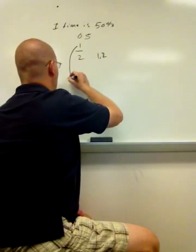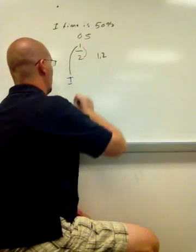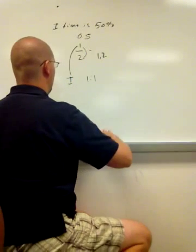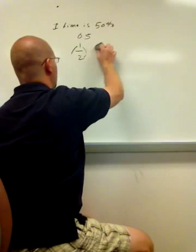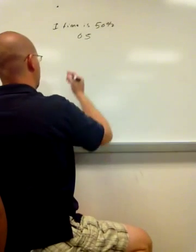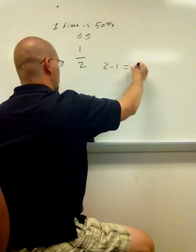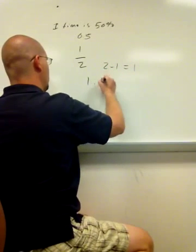One part is my I. 2 subtract 1 is 1, and that gives me a 1 to 1. Let me make this a little less confusing. So 1 to 2, 2 subtract 1 equals 1, gives me a 1 to 1 ratio.